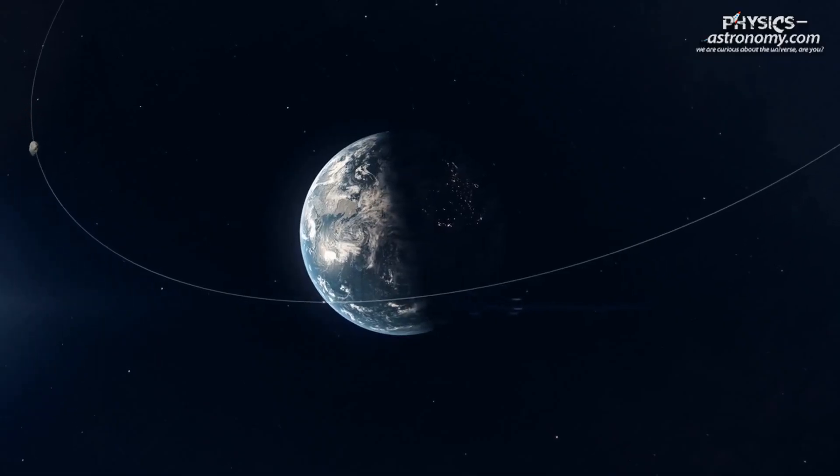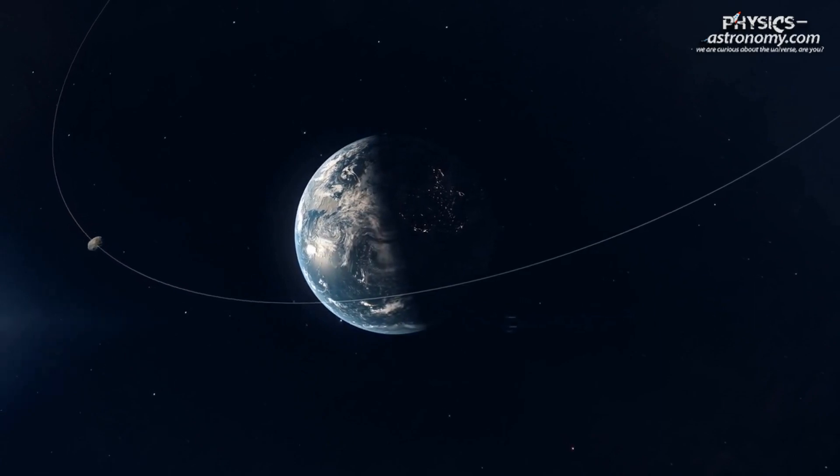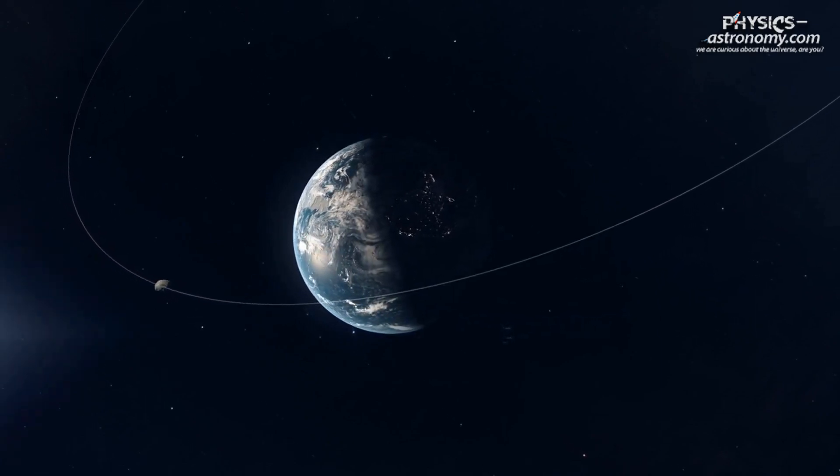Cruthni's orbit is highly elliptical and inclined, taking it both inside and outside of Earth's orbit around the Sun.